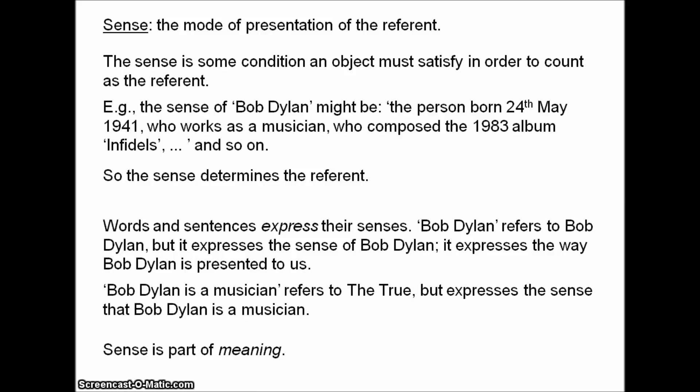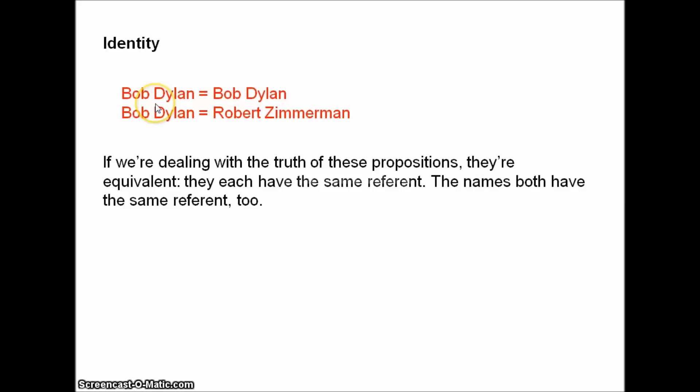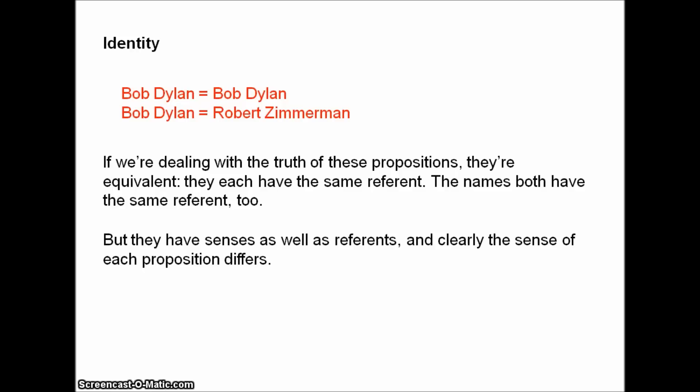Let's take identity. 'Bob Dylan is Bob Dylan' and 'Bob Dylan is Robert Zimmerman.' For Frege, if we're dealing with the truth of these propositions, they're equivalent — they each have the same referent, and the names in both sentences have the same referent too. But these names have senses as well as referents, and the sense of each name can differ. So the sense of each sentence can differ. This arguably explains the difference between these two propositions: the cognitive value of each is different. Robert Zimmerman is a different way of presenting the same referent that Bob Dylan presents.